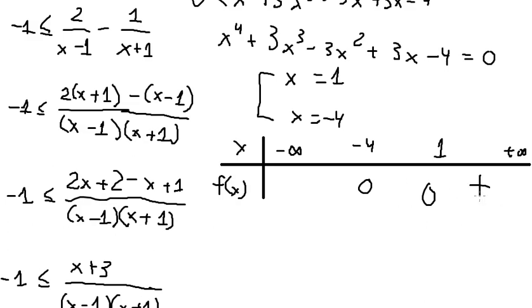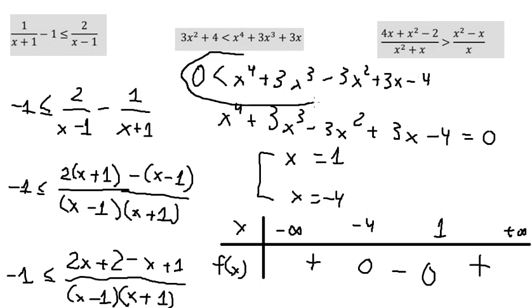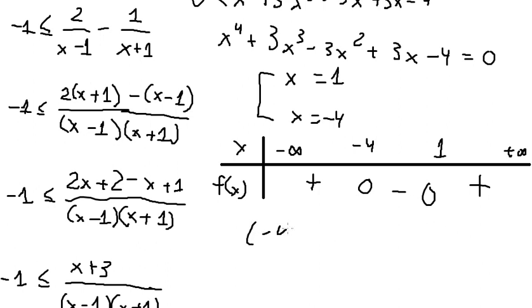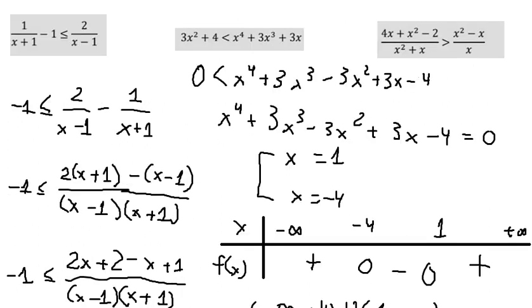The coefficient of s to the power of four is one, which is positive, so the sign should be positive. When passing through zero it goes negative, then back to positive. They want to find where this equation is greater than zero, meaning we want positive regions. So we have this area and this area. And this is the final answer.